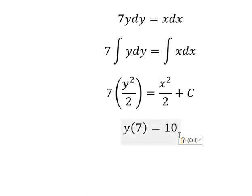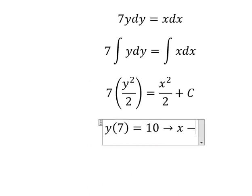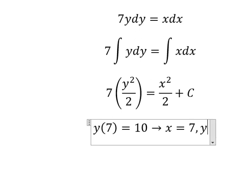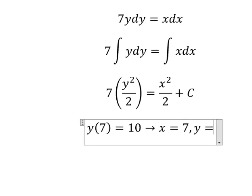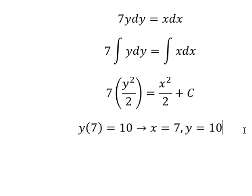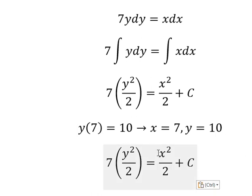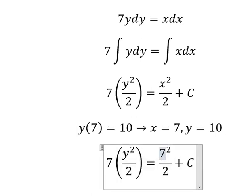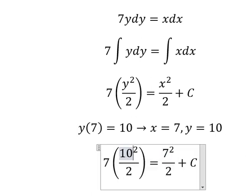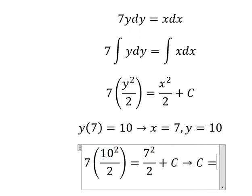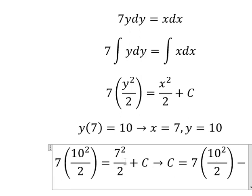That means when x equals 7, y equals 10. So we need to put 7 here, 10 here to find the value of C. So we have this one minus this one.